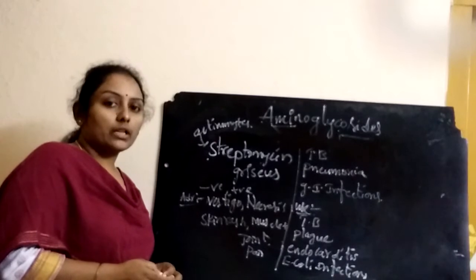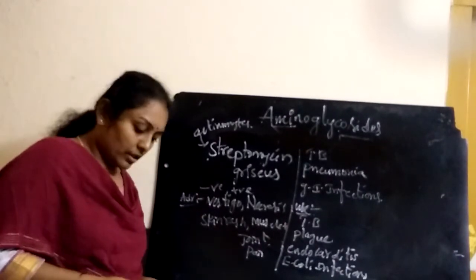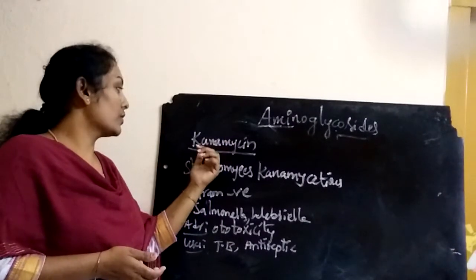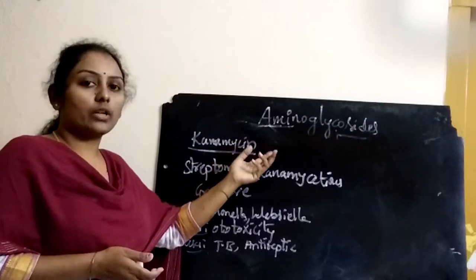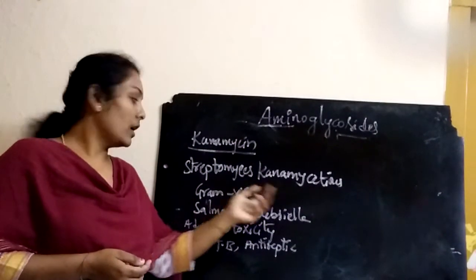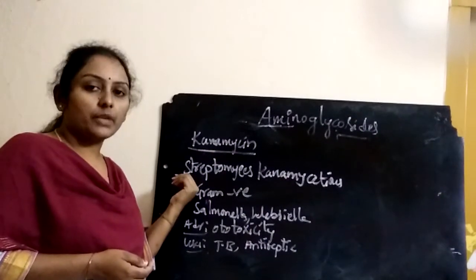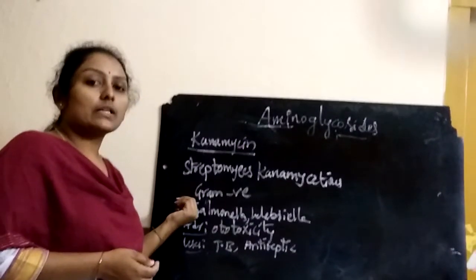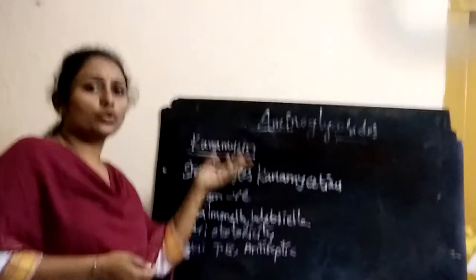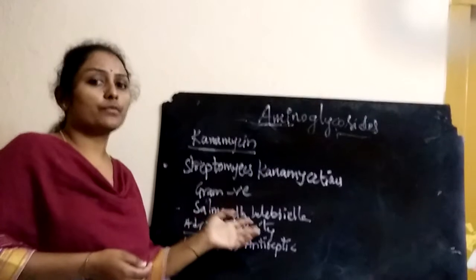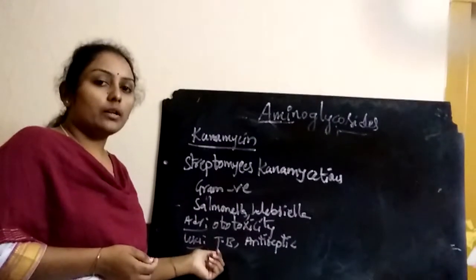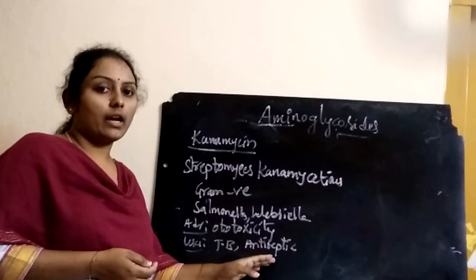Streptomycin is contraindicated in lactating, pregnant, and renal impairment patients. Kanamycin is the second systemic aminoglycoside, used as a chemotherapeutic agent obtained from cultures of Streptomyces kanamyceticus. It has broad spectrum activity, mainly against gram negative bacteria such as Salmonella typhi and Brucella. Adverse reactions include nausea, vomiting, ototoxicity, nephrotoxicity, and cochlear and vestibular toxicities. Its main use is in the treatment of TB and as an antiseptic.